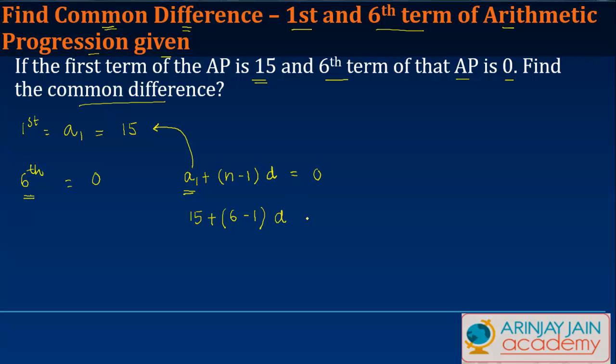Now if that be the case, isn't this a simple exercise? 6 minus 1 is 5, 5 times d gives you 5d plus 15 is equal to 0, or 5d is equal to minus 15, which implies d is equal to minus 15 divided by 5, or minus 3.